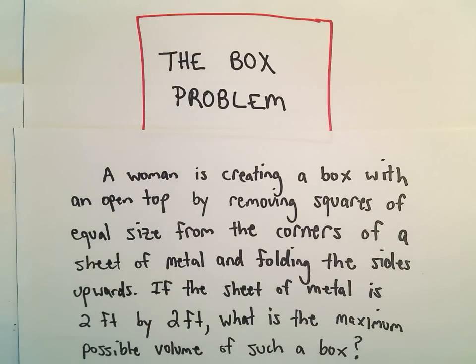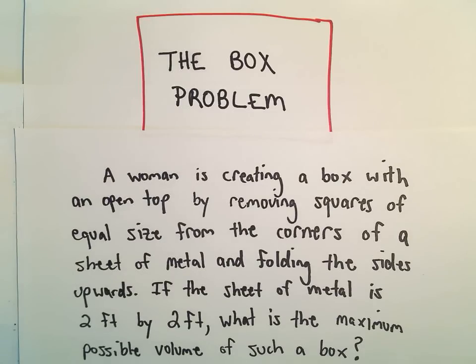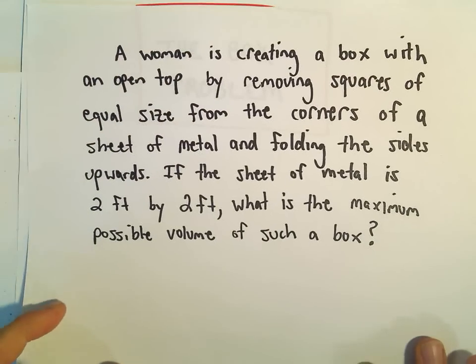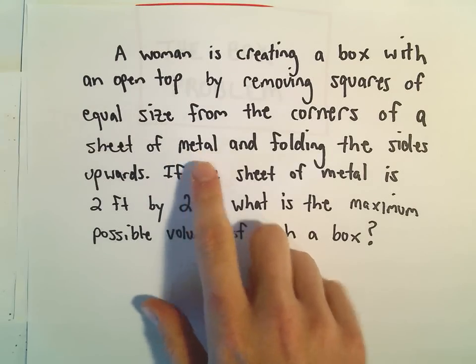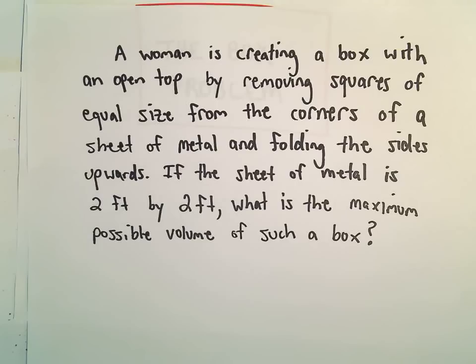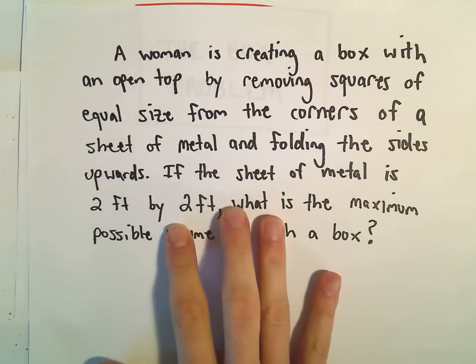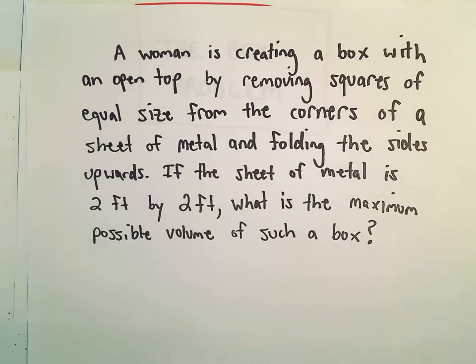Okay, in this video we're going to do an optimization problem, the box problem where we try to maximize the volume of a box. Suppose we've got a woman here creating a box with an open top by taking a piece of sheet metal and removing corners of equal size from that piece of sheet metal and then folding the metal upwards. If the sheet of metal is two feet by two feet, we want to figure out what's the maximum possible volume of the box that she can make.